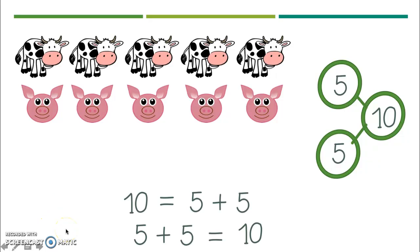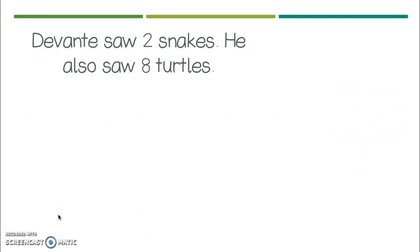All right. Excellent job, friends. Go ahead and erase your board. All right. Now, after I left the farm, I went and hung out at the zoo with my friend Devante. And I was like, Devante, what did you already see at the zoo that I did not get to see? I'm so jealous because Devante said he saw two snakes and he also saw eight turtles. Oh, I'm so jealous.